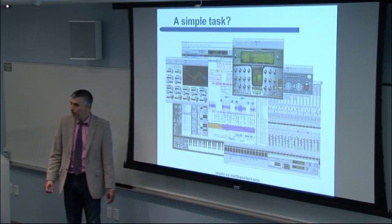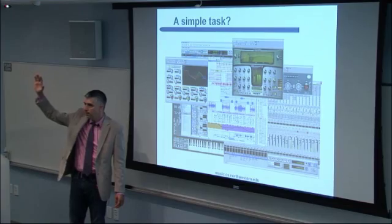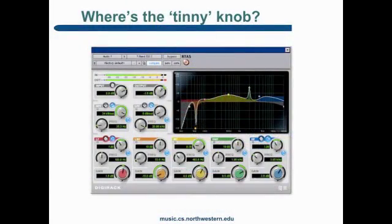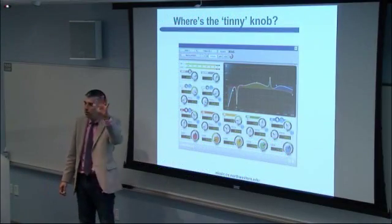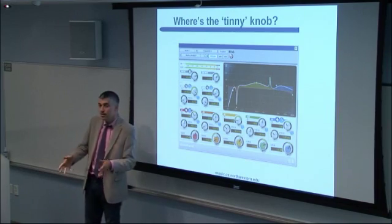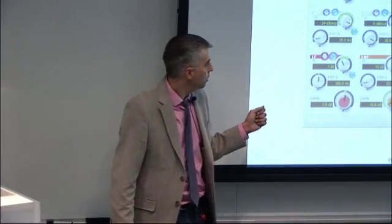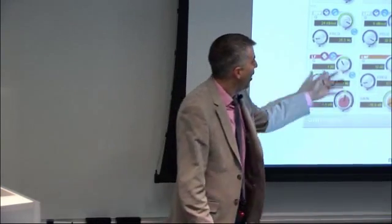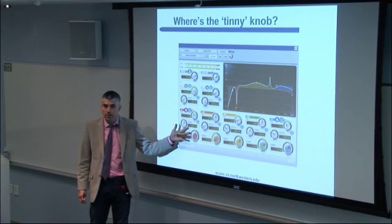Is anyone here confident they know which tool that is? It might be a little more obvious now. This is a parametric equalizer. Parametric equalizers allow you to boost or lower different frequency components of audio. If you want to boost the low end, you turn one knob; for mid-range or high end, a different knob. And the first thing I think is: where's the tinny knob? Of course, there isn't one. You have an idea in your head, but the interface you've been handed is not so clear.